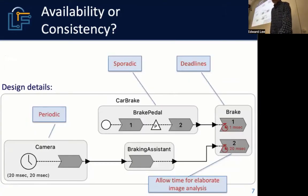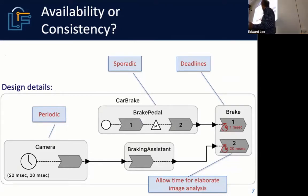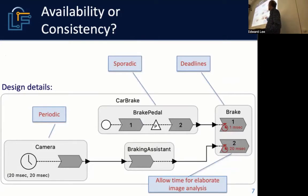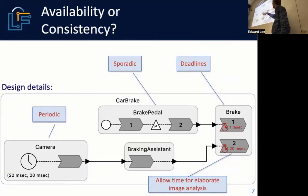Let's look at how you build this application in Lingua Franca. You've got your camera system — let's suppose it takes a frame every 20 milliseconds, so it's periodic. You've got your braking assistant that gives you results every 20 milliseconds but takes some time to do its processing. You've got your brake pedal, which is driven by a physical action, so its output is sporadic.